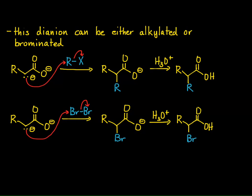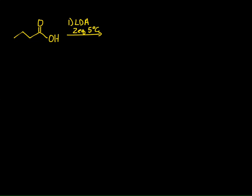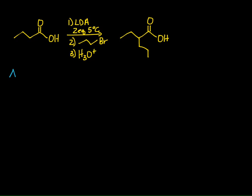Here's an example: I have butanoic acid, reacting it with two equivalents of LDA, followed by reaction with an alkyl halide — in this case propyl bromide — and then an aqueous acidic workup. The product has a propyl group added to the alpha carbon. So this is an alpha alkylation of a carboxylic acid.